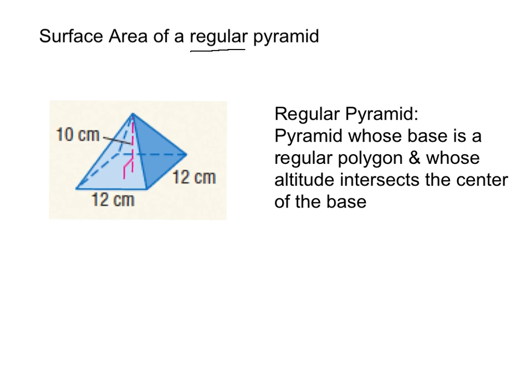Here we have an example of a regular pyramid on the left, and here's our definition: a regular pyramid is a pyramid whose base is a regular polygon and whose altitude intersects the center of the base. Basically, that means the base has to be regular — here we have a square, but you could also have an equilateral triangle, a regular pentagon, any shape where the base has all congruent sides and all congruent angles.